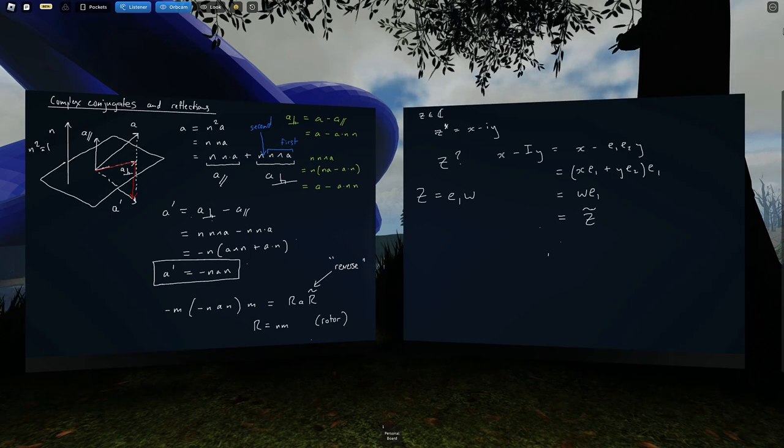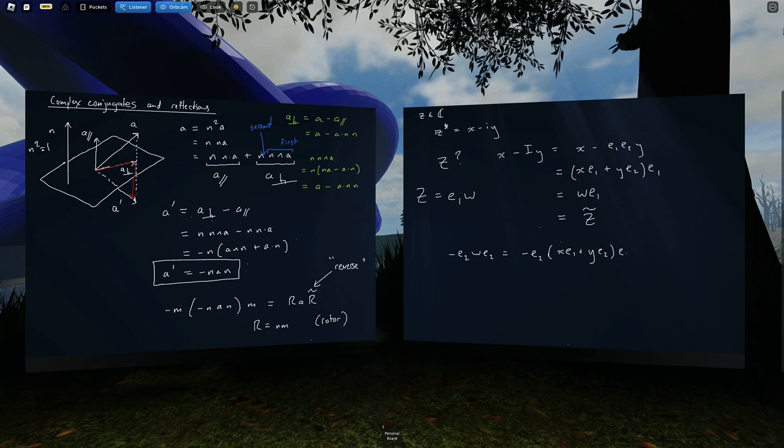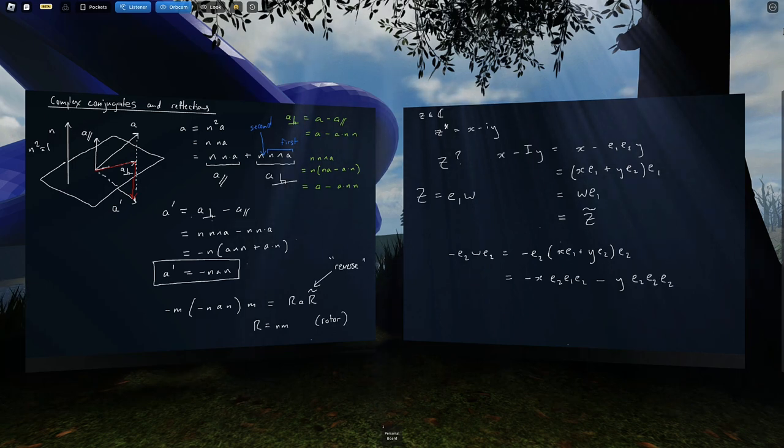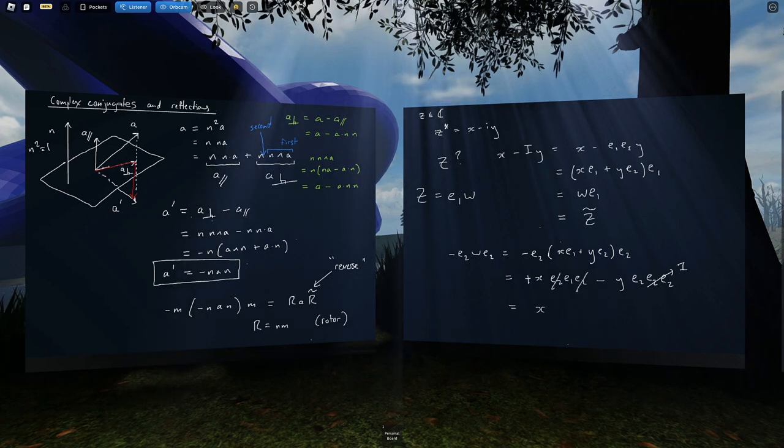Now, if I just apply reflection directly to w, well, I want to reflect along the E2 axis, so that's -E2wE2, right? And again, by a quick manipulation, we get -xE2E1E2, that's the first term, -yE2E2E2, right? So that is one that changes the sign once we kill those. And we get xE1 - yE2, as we expect.